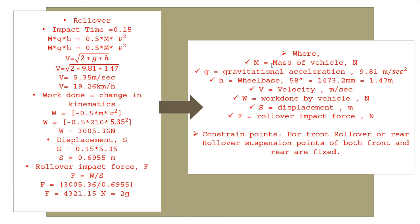Here we have considered m equals mass of vehicle, g is gravitational acceleration, h is wheelbase - 58 inches in our case. As per your condition, consider it, convert it into mm, then into meters, and the meter value we consider in calculation. v is velocity in meter per second, w is work done by vehicle, s is displacement in meters, F equals rollover impact force in Newtons. Constraint points: for front rollover or rear rollover, suspension points of both front and rear are fixed.